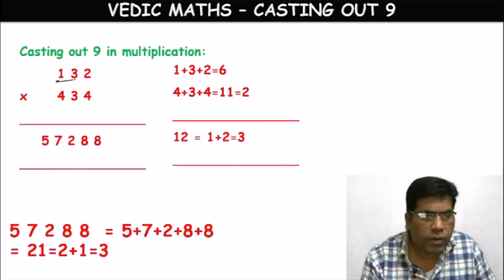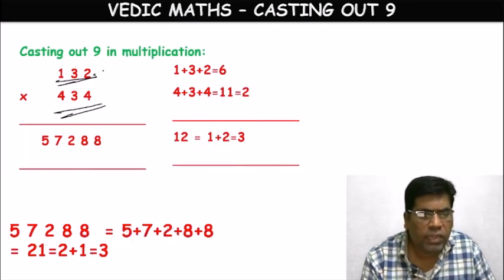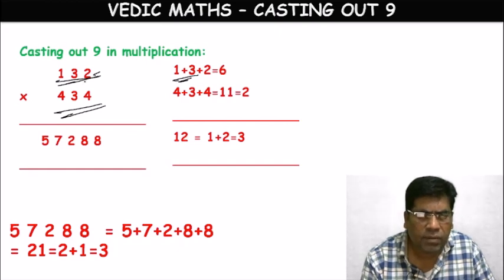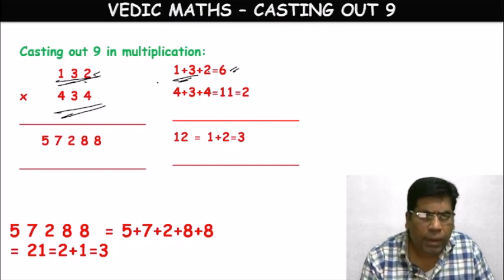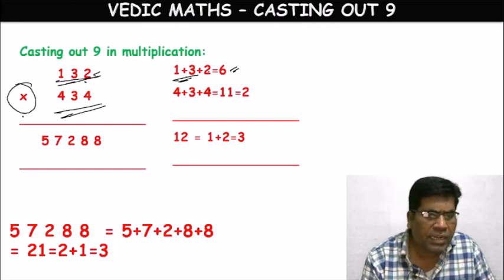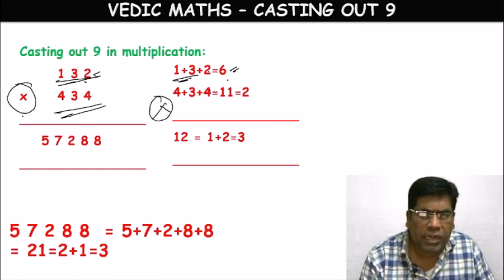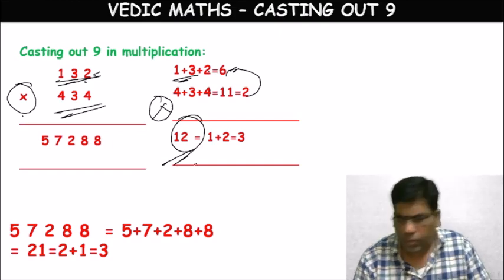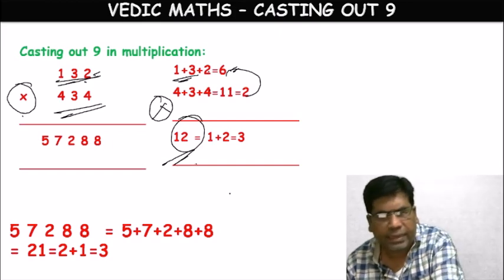While finding single digit values for each number, we use addition. But when combining the condensed single digits according to the given operation, we use the corresponding operation symbol — addition, subtraction, multiplication, or division.